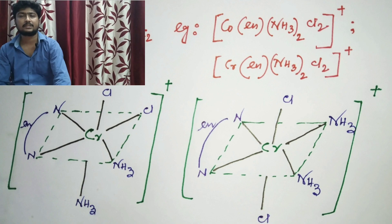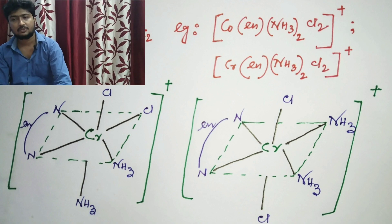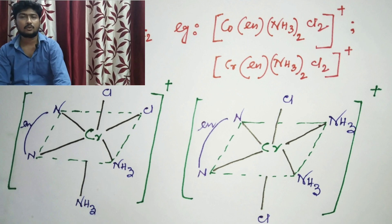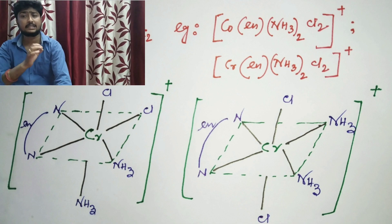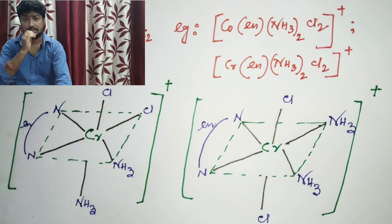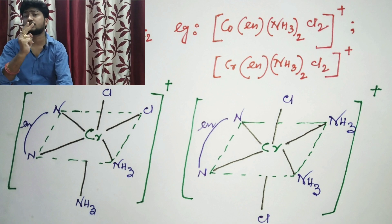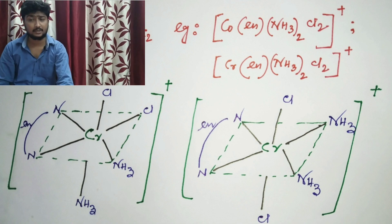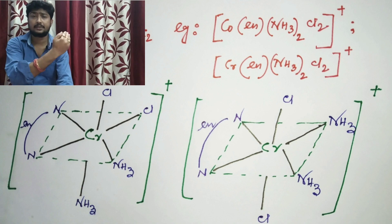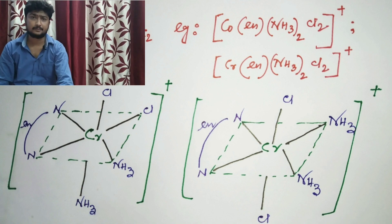The next example is MAAB'2C2, such as [Co(en)(NH3)2Cl2]+ or [Cr(en)(NH3)2Cl2]. In this case, there are also two possible cis isomers. I have shown one cis isomer on the left and one on the right side.